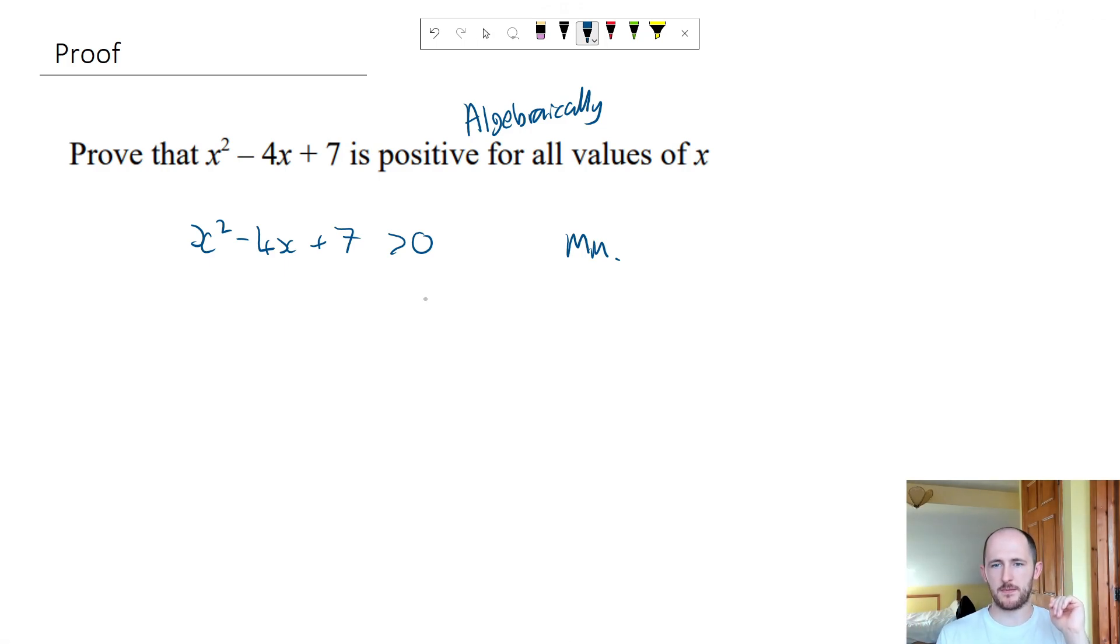So if we do completing the square on this, remember all you need to do is you half the number in front of x so we have x minus 2 squared minus minus 2 squared and then plus 7. Expanding that you get x minus 2 all squared then minus 4 plus 7 and lastly you get x minus 2 squared plus 3.